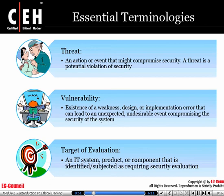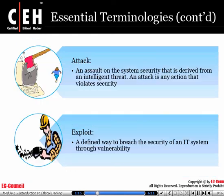When discussing security, we need to make sure we're clear on essential terminologies. First off is a threat — an action or event that might compromise security. A vulnerability is the existence of a weakness, whether in design or implementation, that may lead to an unexpected result. A target of evaluation is the IT system that we are going to test to see how complete its security is. An attack is an assault on the system's security, and an exploit is a proven way for a threat to use a vulnerability.